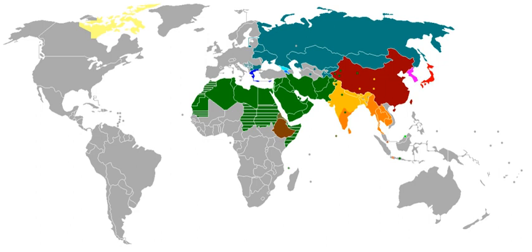An alphabet is a small set of letters, each of which roughly represents or represented historically a phoneme of a spoken language. The word alphabet is derived from alpha and beta, the first two symbols of the Greek alphabet. The first type of alphabet that was developed was the abjad — an alphabetic writing system where there is one symbol per consonant. Abjads differ from other alphabets in that they have characters only for consonantal sounds, and vowels are not usually marked. All known abjads belong to the Semitic family of scripts and derive from the original Northern Linear abjad. The reason for this is that Semitic languages and the related Berber languages have a morphemic structure which makes the denotation of vowels redundant in most cases. Some abjads, like Arabic and Hebrew, have markings for vowels as well, but they use them only in special contexts, such as for teaching. Many scripts derived from abjads have been extended with vowel symbols to become full alphabets.